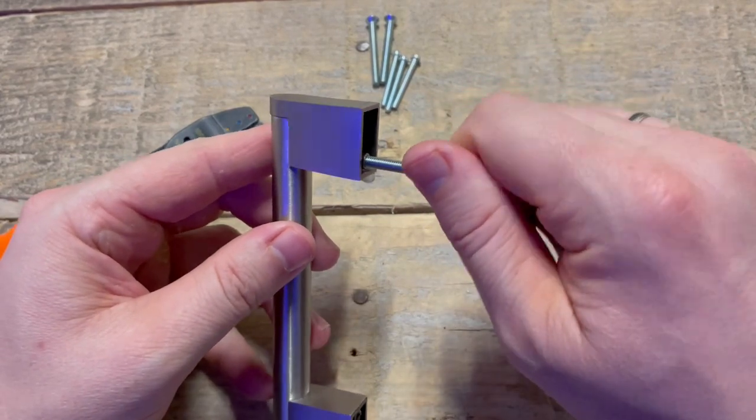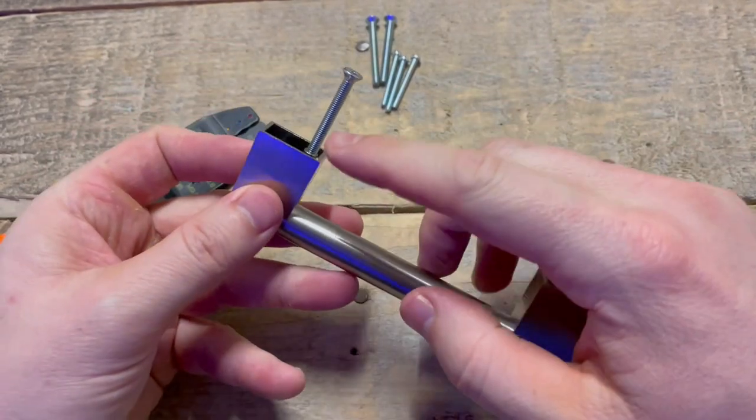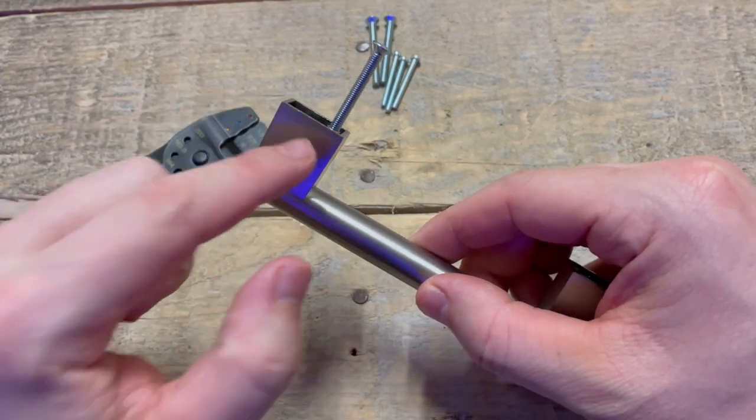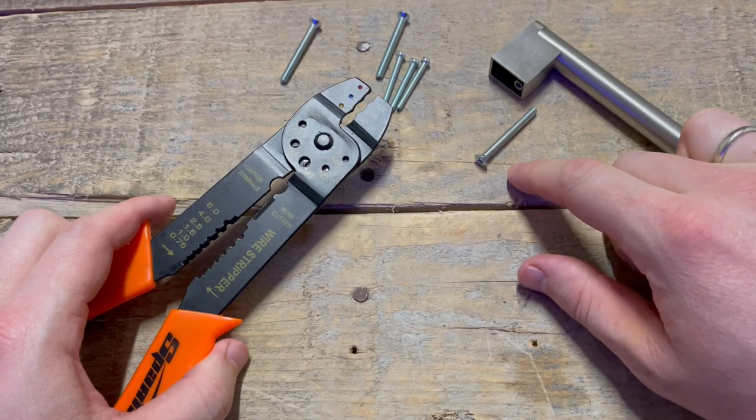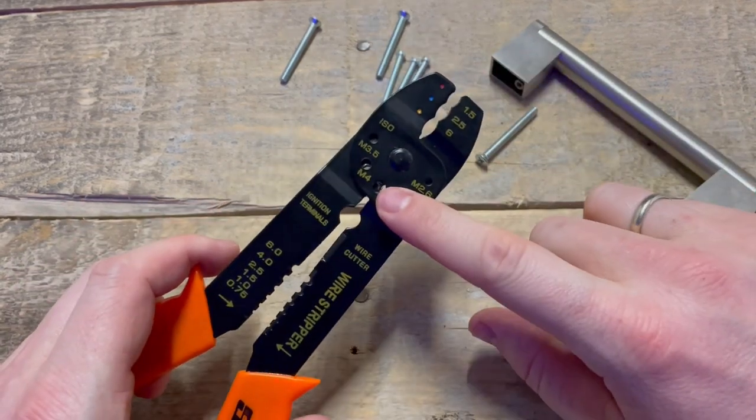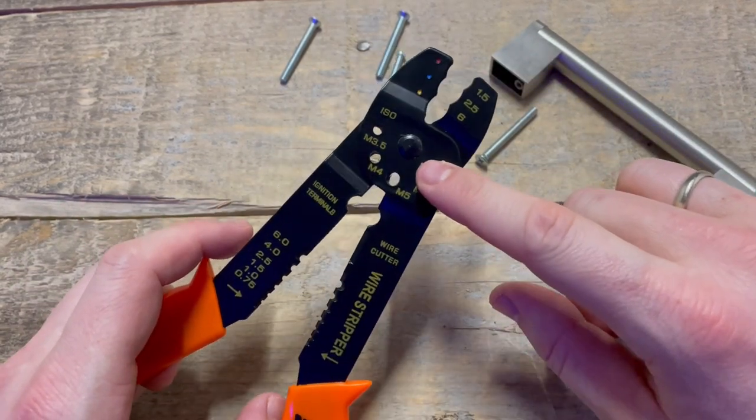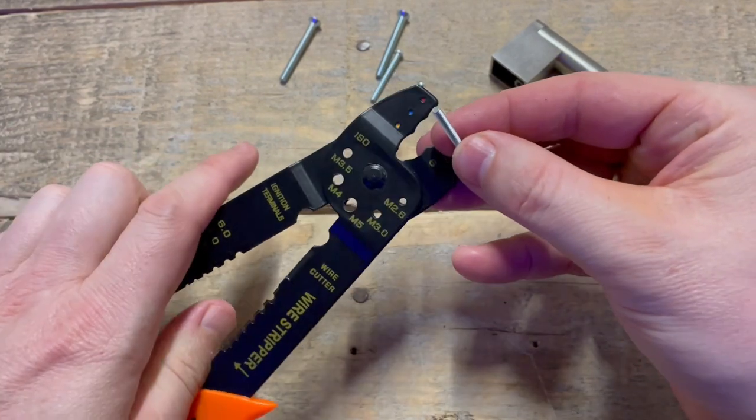But as you can see, when I put these screws in they are too long and I will not be able to tighten up this handle against the cabinet doors. When you have a case like this with too long bolts, we are going to use these holes on this wire stripper to cut these bolts.